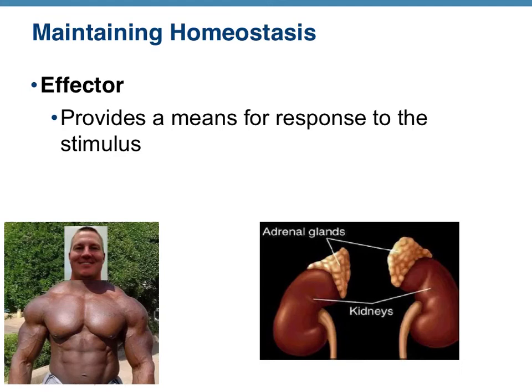The effector is what actually carries out the response. An effector is typically a muscle or some sort of gland — for example, the adrenal glands. When the adrenal glands get a message from the control center or the central nervous system, they release adrenaline into the bloodstream. That is the effect.